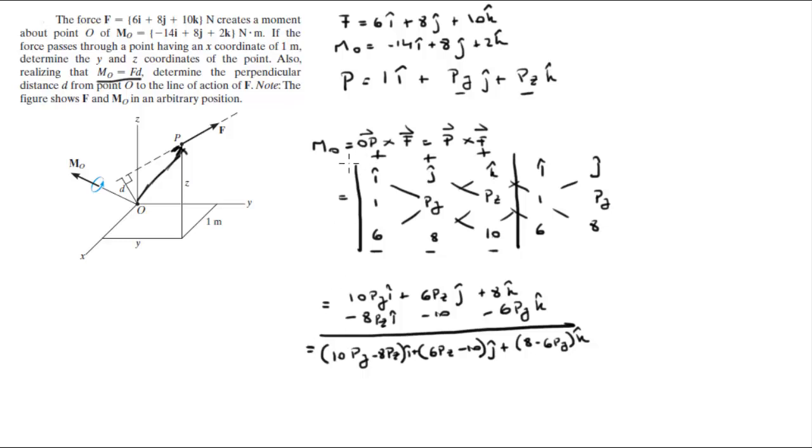This is the moment at O. But the moment at O is given at negative 14i plus 8j plus 2k. So negative 14 is equal to this equation. 8 is equal to this, and 2 is equal to this.